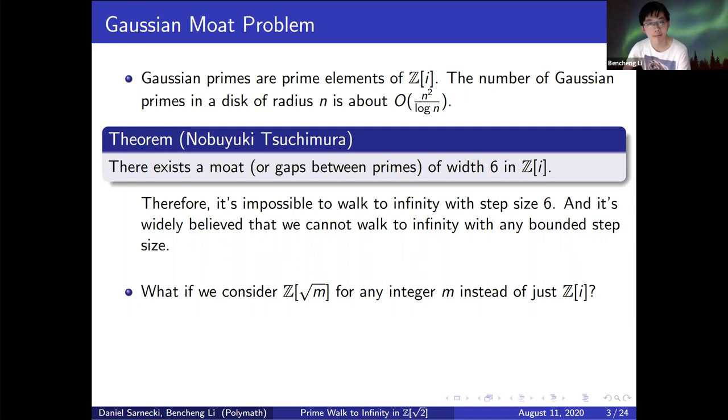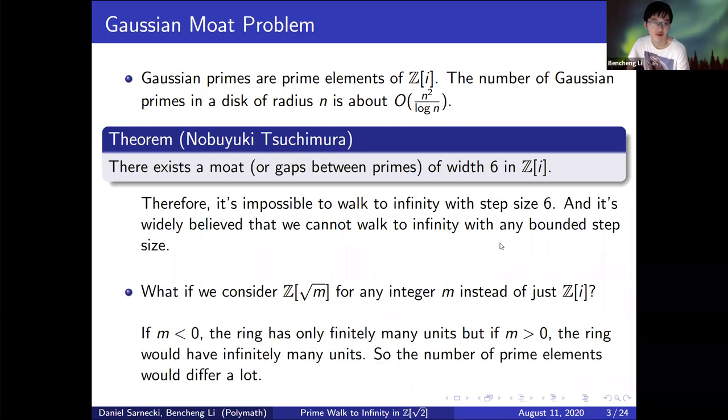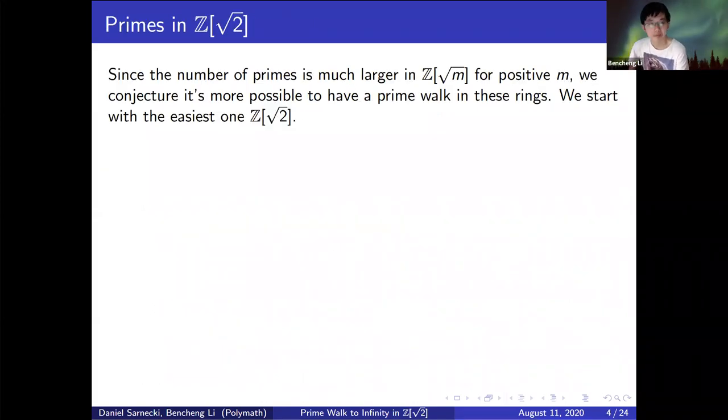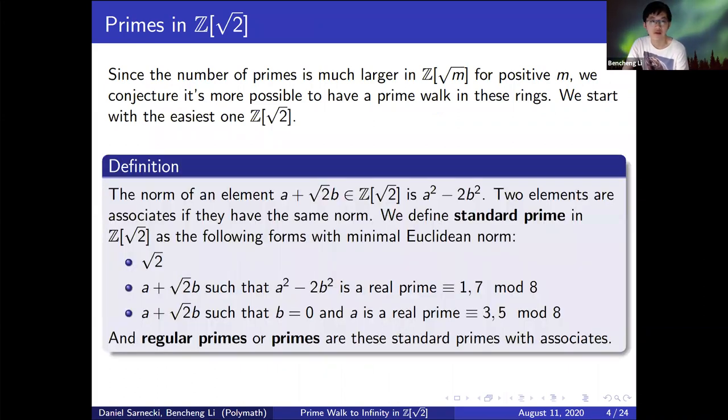What if we consider the integer ring Z[√n] for any integer n instead of just i? So n can be any integer. In this talk, we choose n to be 2, so we consider the ring Z[√2]. The simple observation was that if m is less than 0, then the ring has only finitely many units. But if m is greater than 0, the ring would have infinitely many units. So the number of prime elements will differ a lot because if we have a lot of units, then we must have a lot of prime elements in that ring. So we think that in the ring Z[√2], there must be more chances or opportunities to have a prime walk than Z[i].